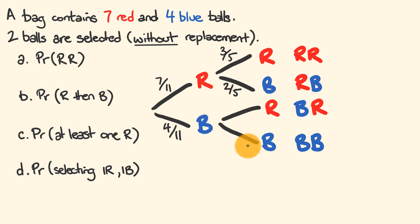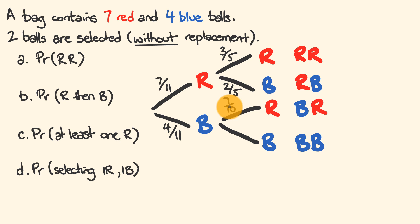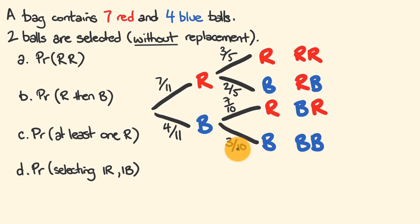If instead we chose a blue ball first, we still have all seven reds left out of 10 remaining balls — so the probability of red second is 7/10. The probability of blue second is 3/10, since one blue was removed. Take your time with these and think carefully about what's going on.